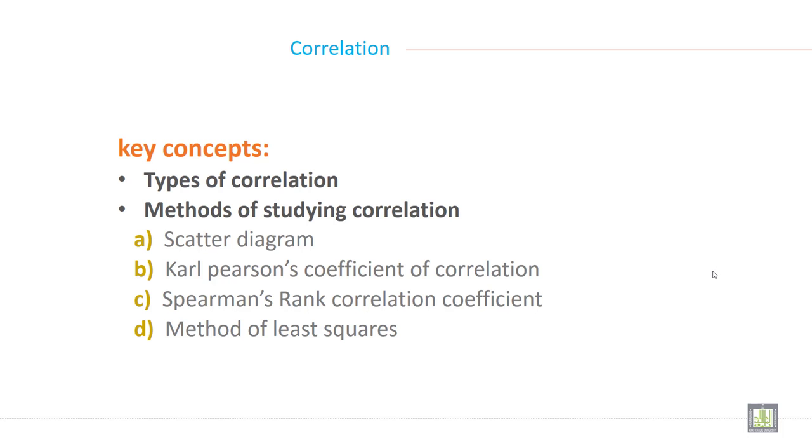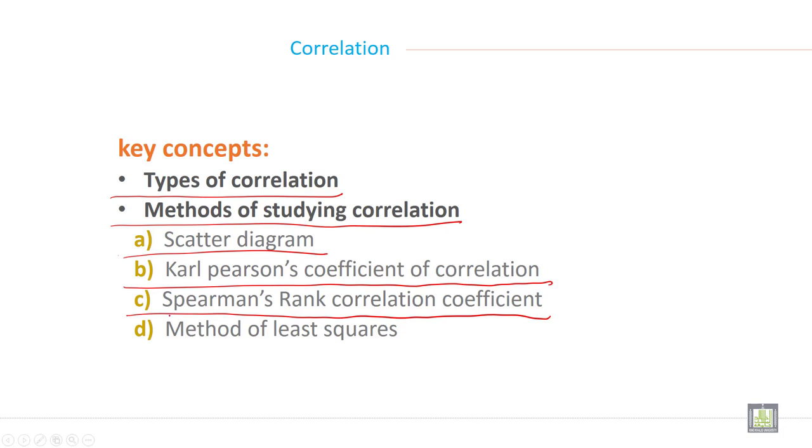Various concepts of correlations. In this lecture, we will discuss about the meaning and definition of correlation, then we will discuss about types of correlation, then method of studying correlation, scatter diagram, Karl Pearson coefficient of correlation, Spearman rank correlation coefficient and method of least squares.